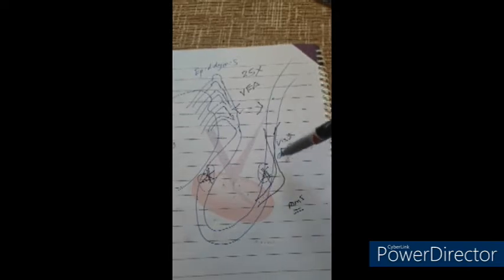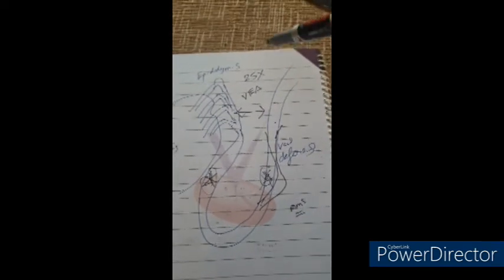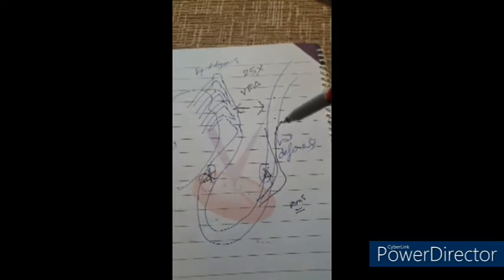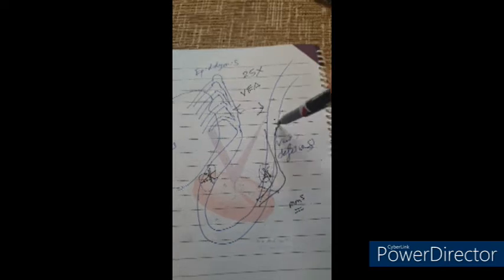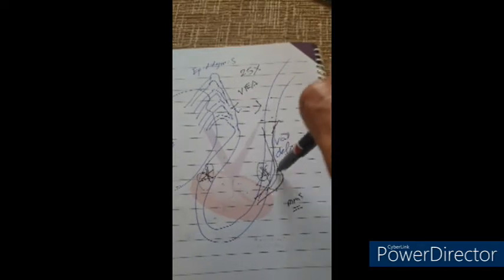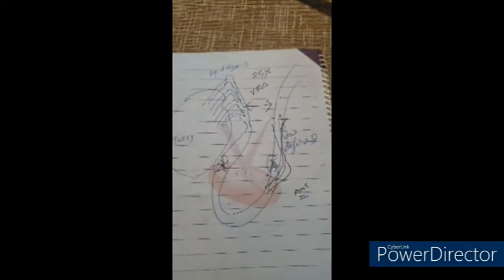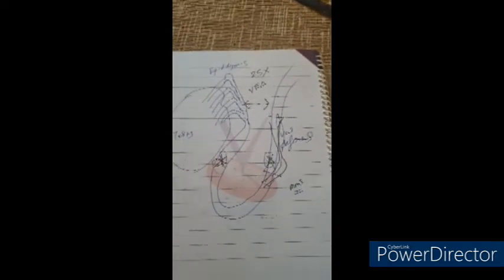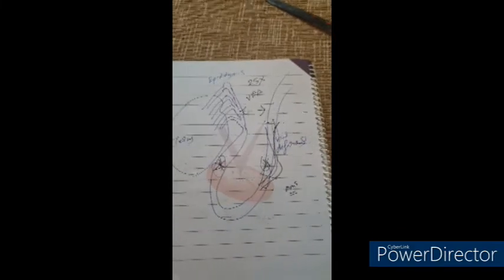These small tubules are anastomosed when there's a block in the vas, proximal and distal. It's like a roadblock that we bypass by creating a separate channel, cutting the vas at two levels and joining it, bypassing the obstruction. Those are the two obstruction levels.